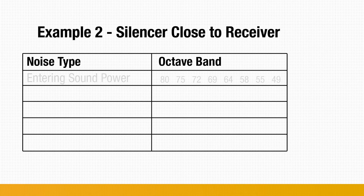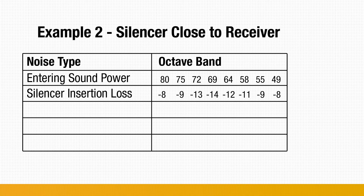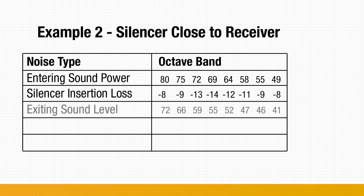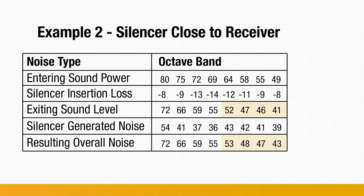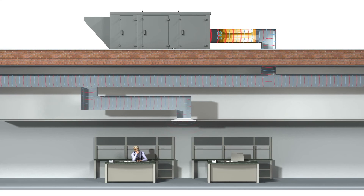In the second example, the silencer is located far from the noise source and close to the receiver. As a result, the noise levels entering the silencer are lower than in the first example. After the silencer's insertion loss is applied at each octave band, exiting overall noise levels are once again logarithmically added to the silencer's generated noise, and in some cases there is an increase in noise because both levels are within 10 dB of each other. The takeaway: locate silencers as close to the noise source as possible in order to minimize any impact from a silencer's generated noise.